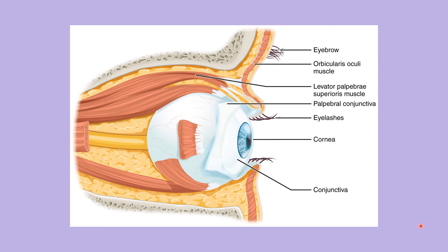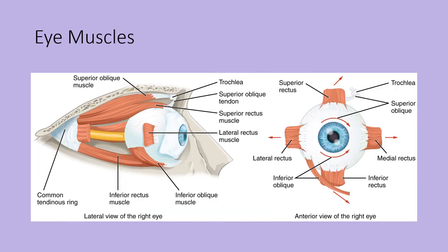The lacrimal apparatus produces tears to lubricate the eye every time you blink. There are six external muscles that help move the eye sideways, up and down, and at angles.